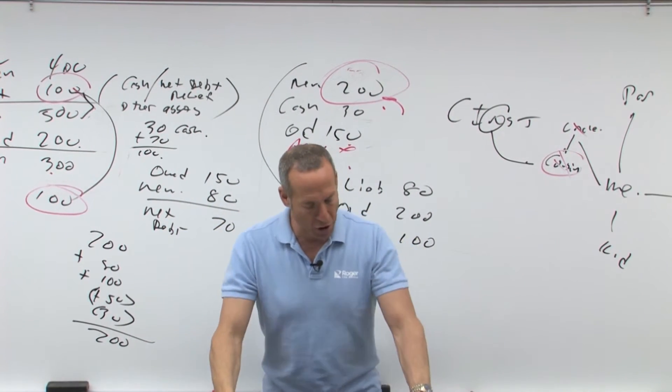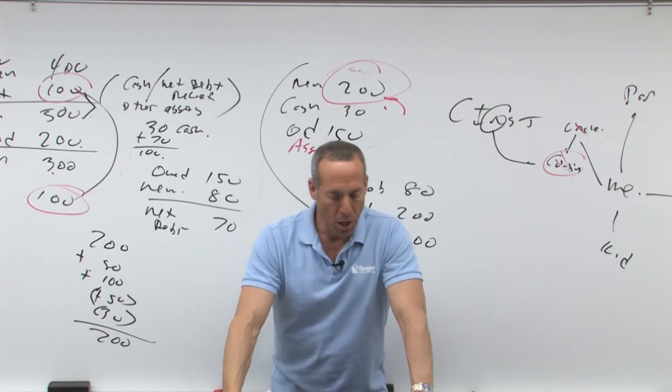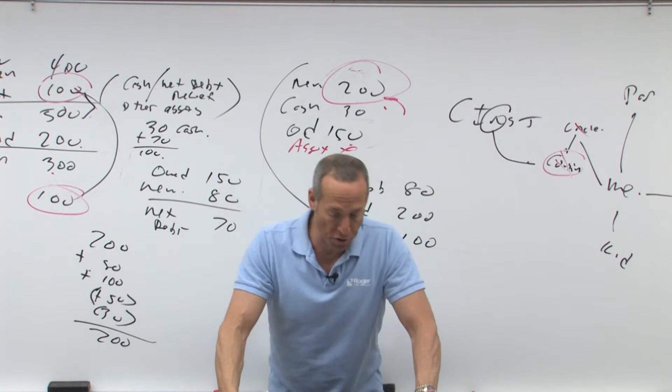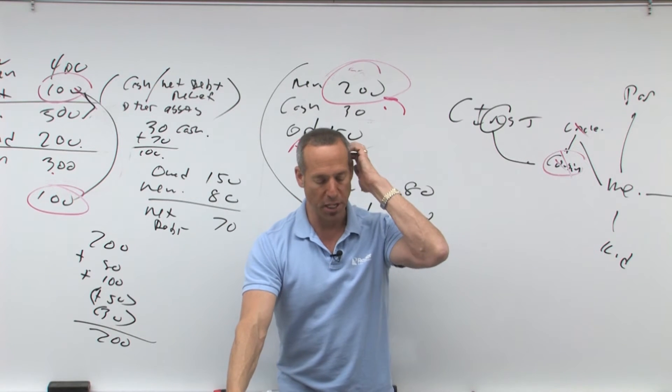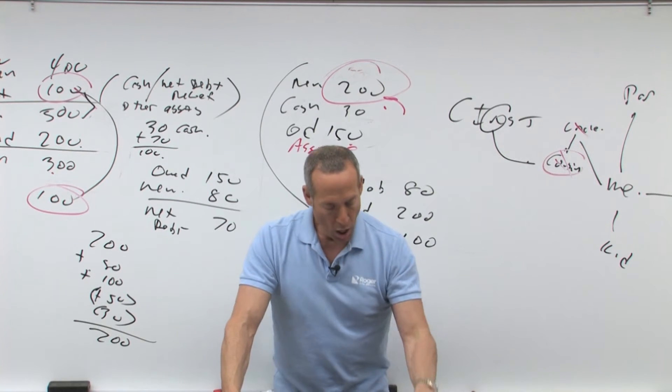It says here, in order to do this, all the following conditions. The proceeds from the sale have to go to an escrow account. The replacement property has to be identified within 45 days. And the replacement property has to be acquired within 180 days.